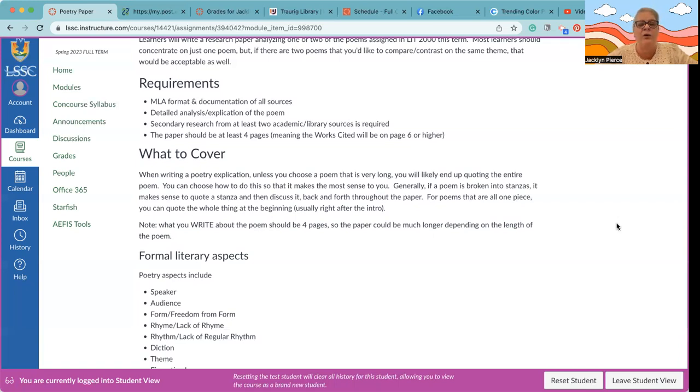Set plain, double space, and then the work cited will be on six or higher. You may find that this paper is automatically a lot longer because you're including set pieces from the poem, if not the whole poem. When writing a poetry explication, unless you choose a poem that's very long, you will likely end up quoting the entire poem. You can choose how to do this so that it makes the most sense to you. It can be broken into stanzas. If the poem is broken into stanzas, then it makes sense to quote a stanza and then discuss it and kind of go back and forth. But some poems of course are all just one piece, and so I usually would put the introduction, quote the whole poem, and then write about it.